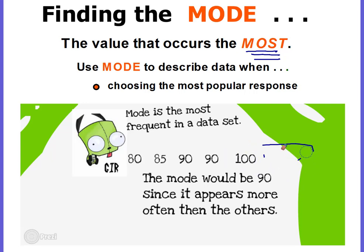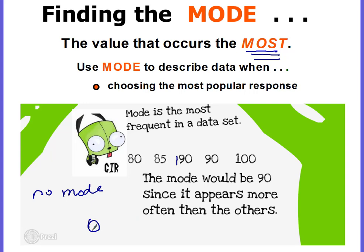Now let me change it up. What if I changed one of the 90s to a different number so they all appear the same amount of times — they all appear once? Then there would be no mode. A lot of students make the mistake of saying the mode is zero and they write zero. But zero is a numerical piece of data, and by putting zero you're saying that zero appears more times than anything else, and you can't say that. So if there is no mode, you say 'no mode.'